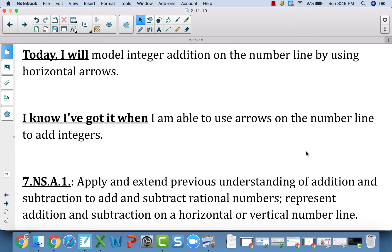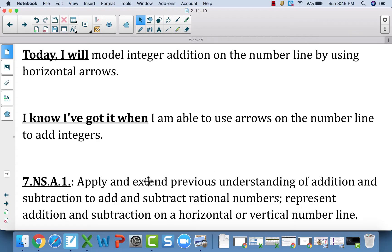Today you guys are going to model integer addition on the number line by using horizontal arrows. I know I've got this when you guys are able to use arrows on the number line to add integers. Our standard is 7.NS.A1, which is apply and extend previous understandings of addition and subtraction to add and subtract rational numbers. Specifically, we're focusing on the addition part and representing addition on a horizontal number line today.